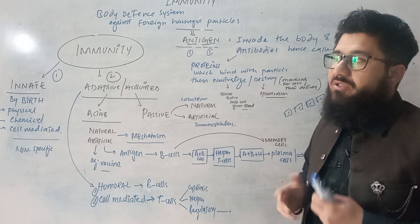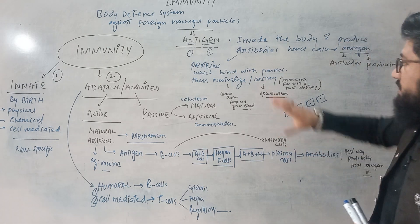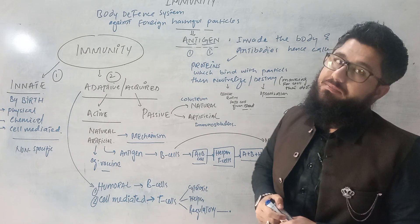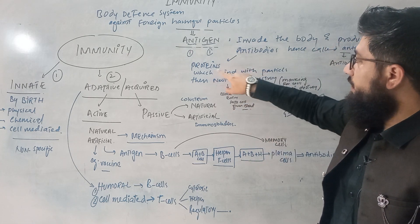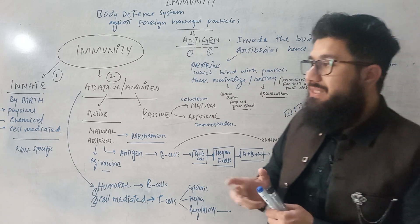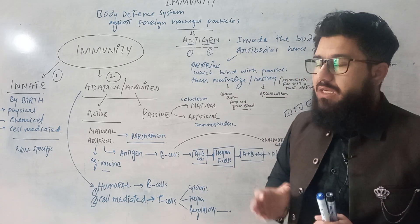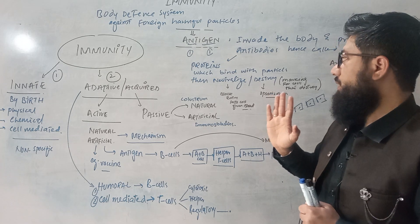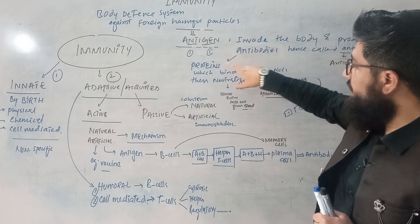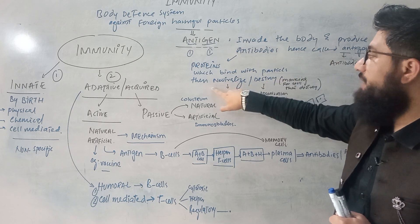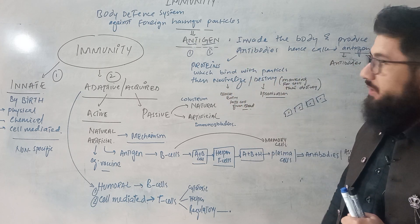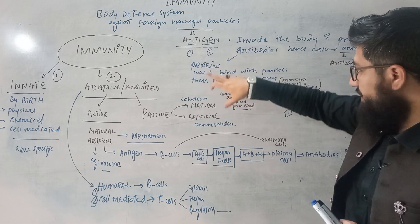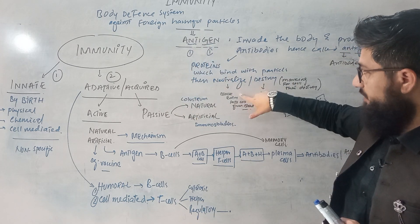Now what are antibodies? Simply put, antibodies are proteins. These proteins bind with the foreign particles and either neutralize or destroy them. So antibodies are proteins which bind with foreign particles and either neutralize them or destroy them.